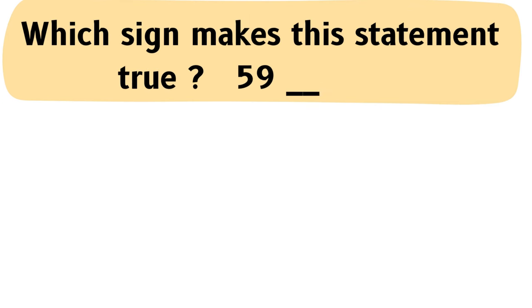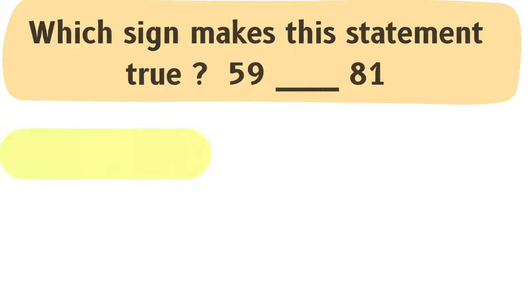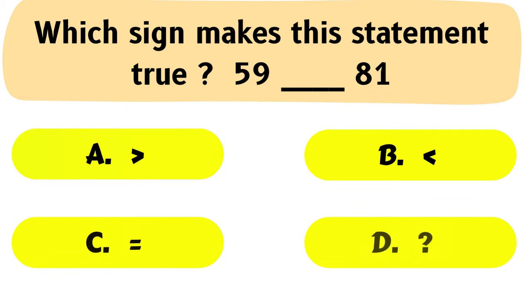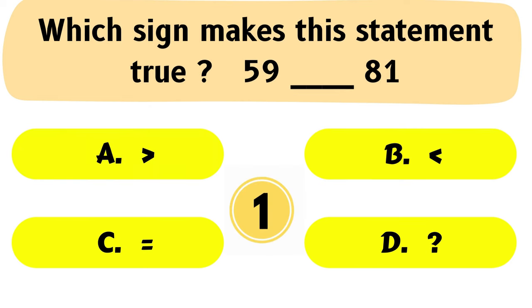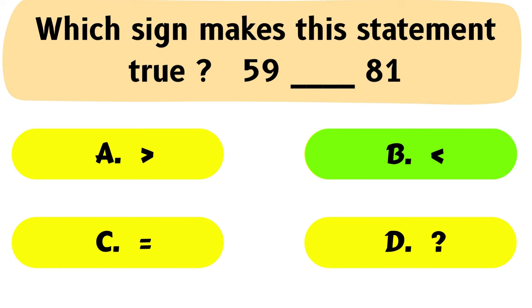Question No. 50: Which sign makes this statement true? 59 ___ 81. The correct answer is Option B: 59 is less than 81.